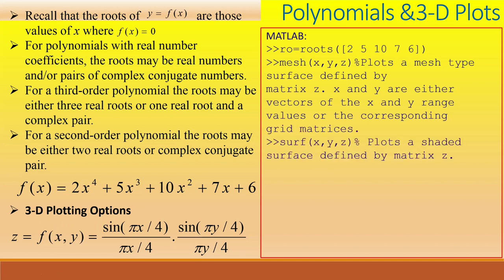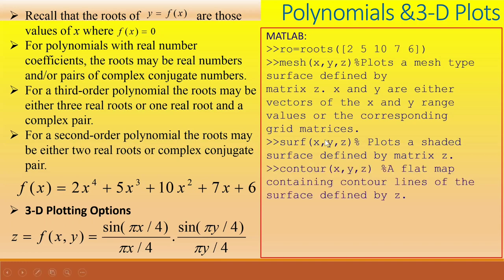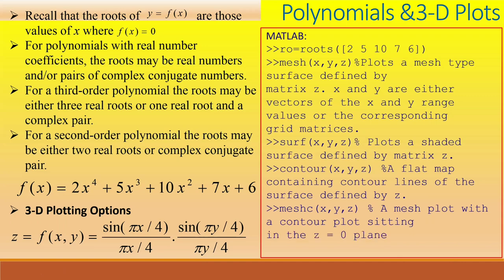Surf with parameters x, y, z plots a shaded surface defined by matrix Z. The contour with parameters x, y, z generates a flat map containing contour lines of the surface defined by Z. The meshc with parameters x, y, z generates a mesh plot with a contour plot sitting in the z = 0 plane.